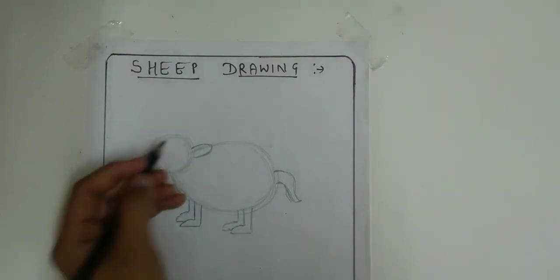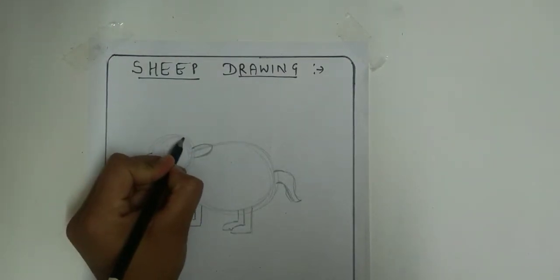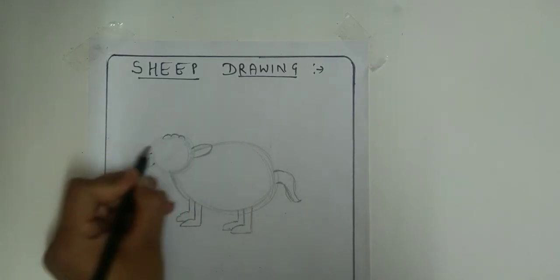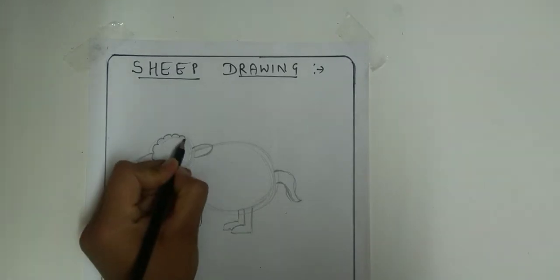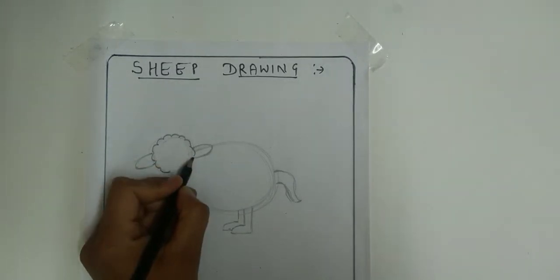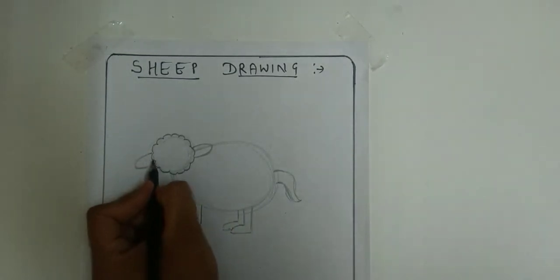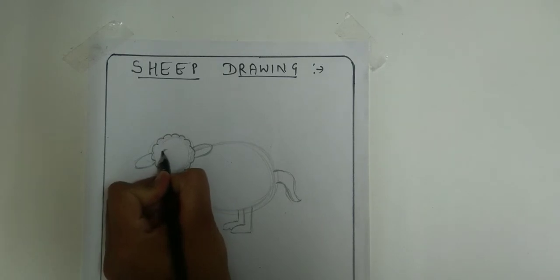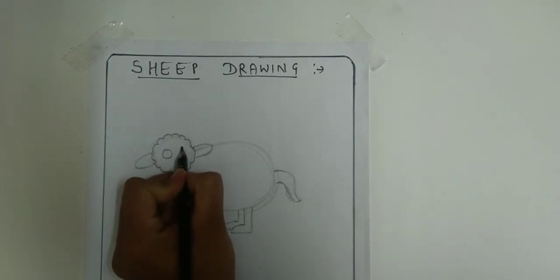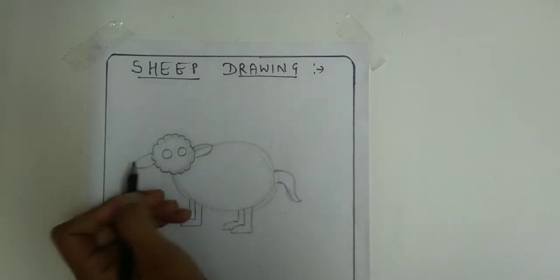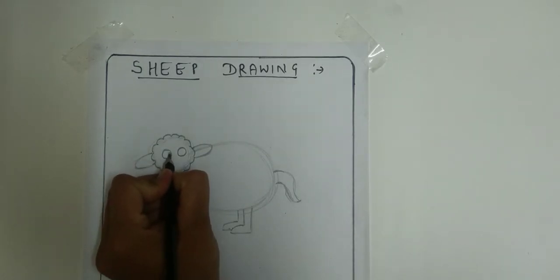Now make a small curve like this for her shape of hairs. Then make two small circles for her eyes. Two lines.